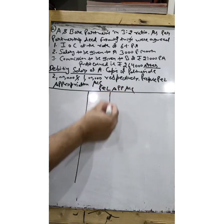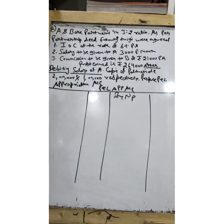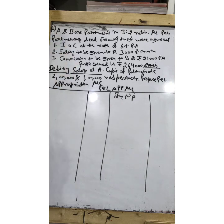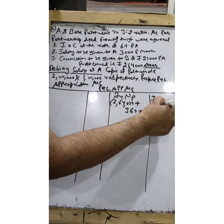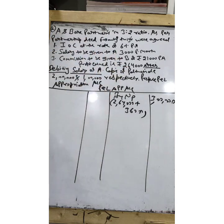Here you need to be a bit street smart. Think of it this way: I have ₹10 after paying ₹5 to Sham — how much did I have originally? ₹15. Same logic applies here. Profit earned is ₹2,64,000 after debiting salary of A, which is ₹3,000 per month = ₹36,000. So the actual net profit was ₹2,64,000 + ₹36,000 = ₹3,00,000.